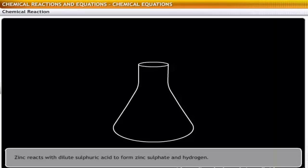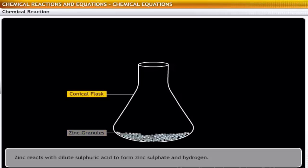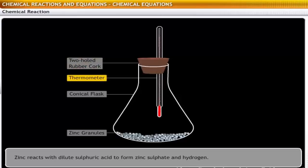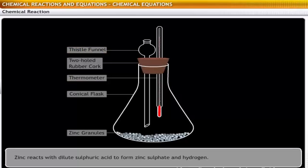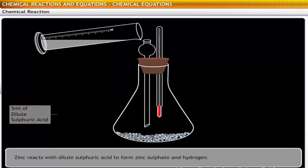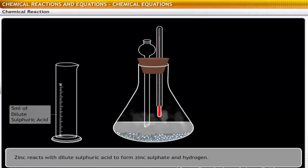Let us see what a chemical reaction is through an experiment. We begin with some zinc granules in a conical flask. These granules are blue-gray in color. Fit a two-hole rubber cork on this flask. Then we fit a thermometer into one hole of the cork and a thistle funnel into the other hole. Next, pour 5 ml of dilute sulfuric acid into the conical flask through the thistle funnel.